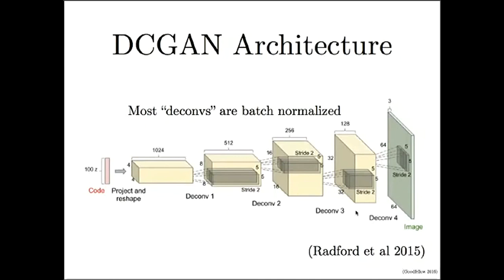If you move the kernel by more than one position on each step — using a stride greater than one in TensorFlow terminology — the image actually gets quite a lot larger every time you apply a deconvolution layer. One of the other important ideas in this paper was to use batch normalization in most layers of the network, which allows it to learn much faster and be much more stable.